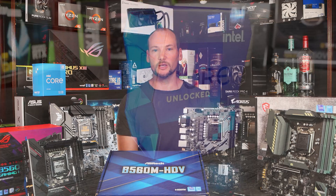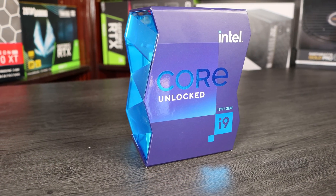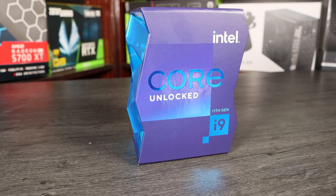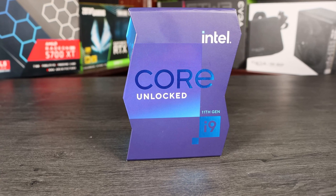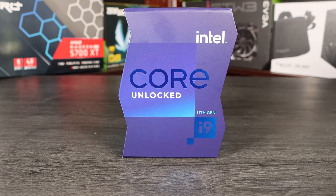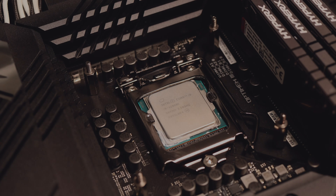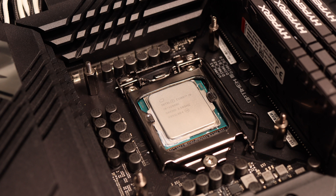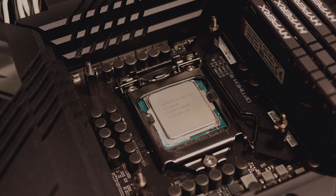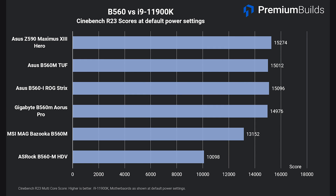To test this, we tried the i9-11900K on each of these boards using unlimited power settings to see what they were capable of. For comparison, we have the result from the ASUS ROG Maximus 13 Z590, a motherboard with VRMs so overkill you could run your house off of it. This chip will use 250 watts if overclocked, but at default settings it draws a maximum of 170 to 180 watts. Both the MSI and ASRock HDV — the two cheapest boards — deliver substantially subpar results, while the Gigabyte and two ASUS boards achieve full performance for this demanding CPU, nearly matching the Z590's score.